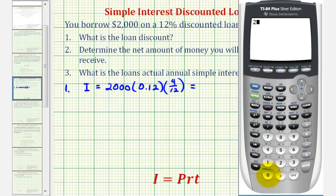So we have 2,000 times 0.12 times four twelfths, which is equivalent to one-third. Again, four months is one-third of a year. So the loan discount is $80.